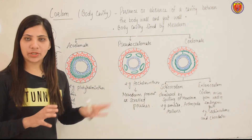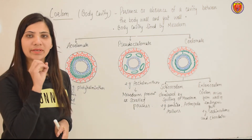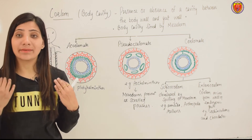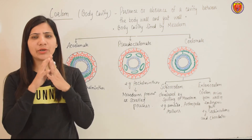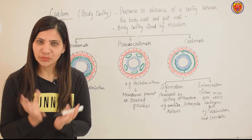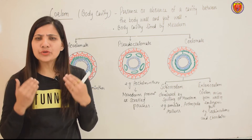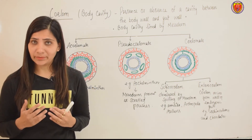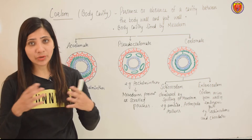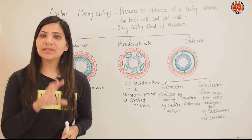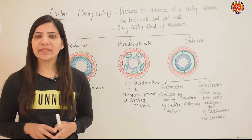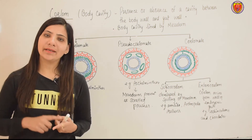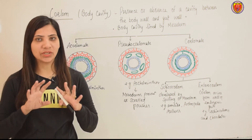Pehle germ layer ko samajh lete hain. Jab hum embryonic stage mein hain — sabse pehle bana zygote. Hum bhi ek single cell rahe chuke hain. Zygote mein continuously division hona start hota hai. Kuch bhi banne se pehle teen germ layers ban jaati hain. Tissue banenge pehle, tabhi toh organ banayi hai. Teen germ layers present hain — ectoderm, mesoderm, and endoderm.